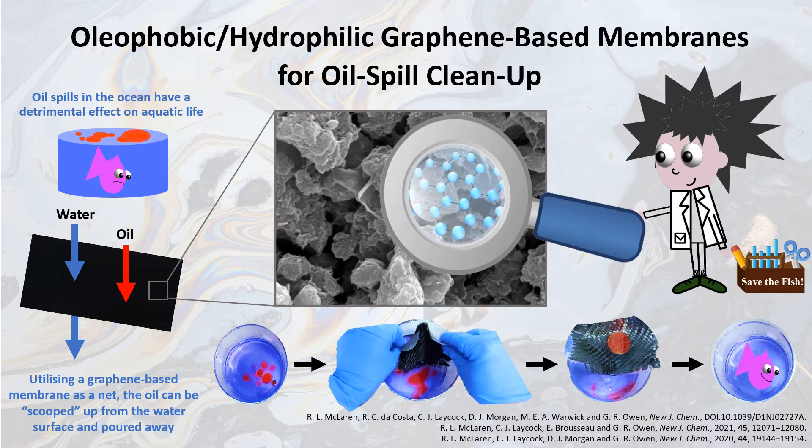This oil layer can poison many organisms including fish. We see here an unhappy looking fish swimming below a layer of oil, which is represented by the red droplets. At present, a number of methods exist to remove oil from water including booms, dispersants, sorbents and in situ burning.